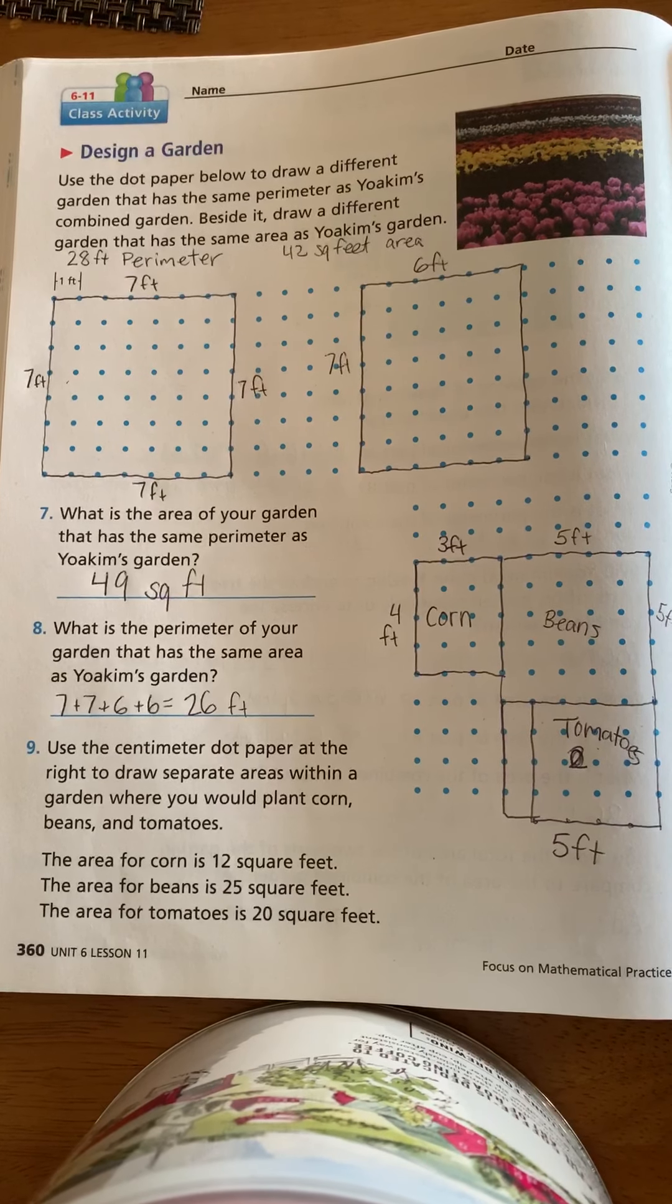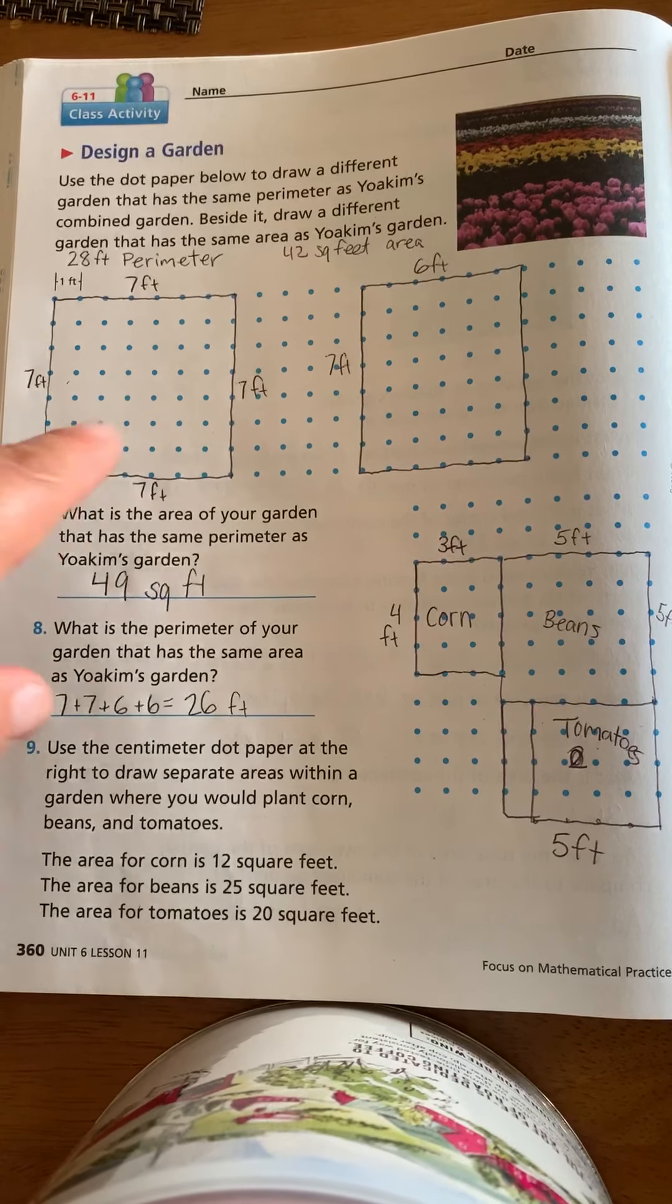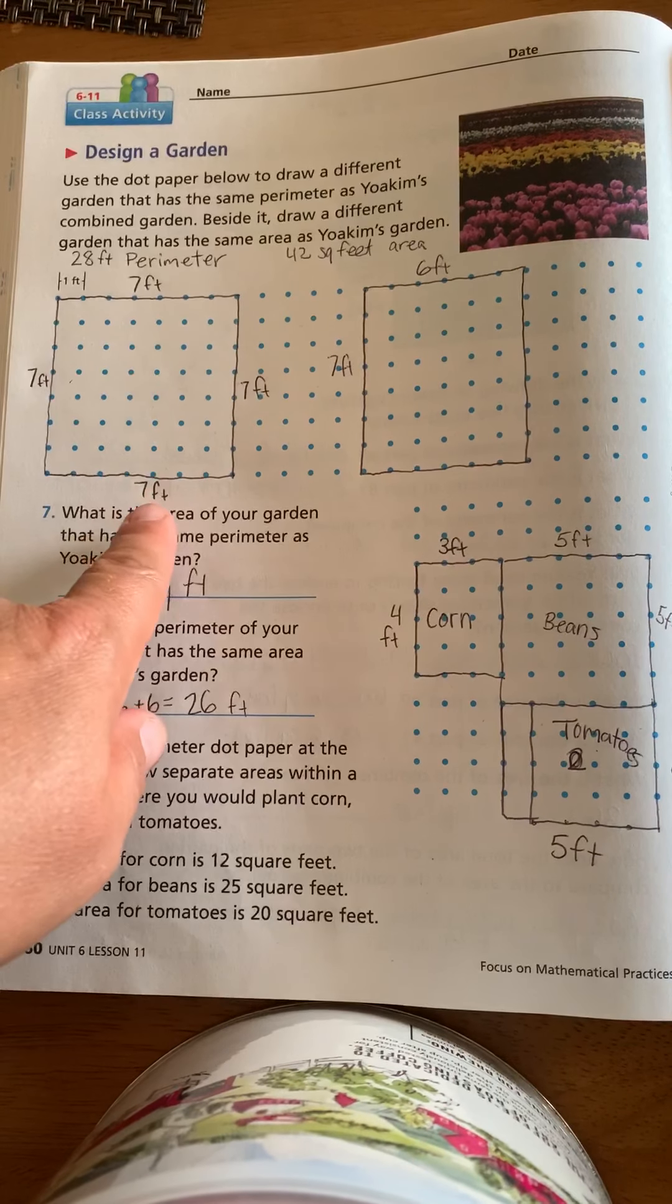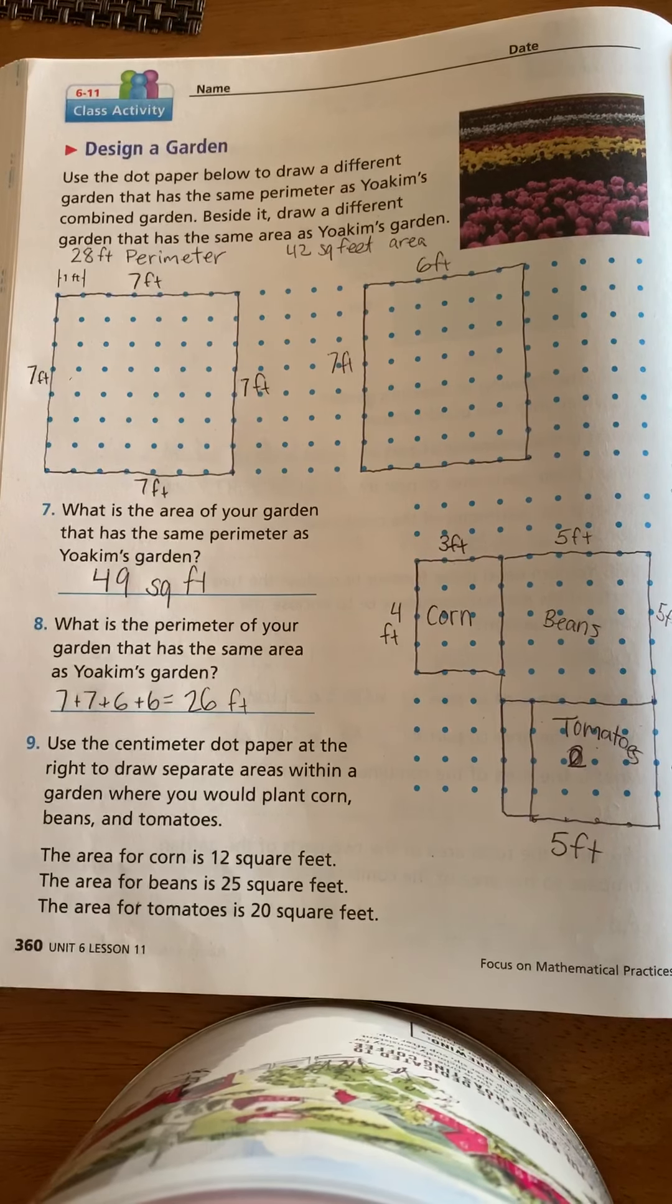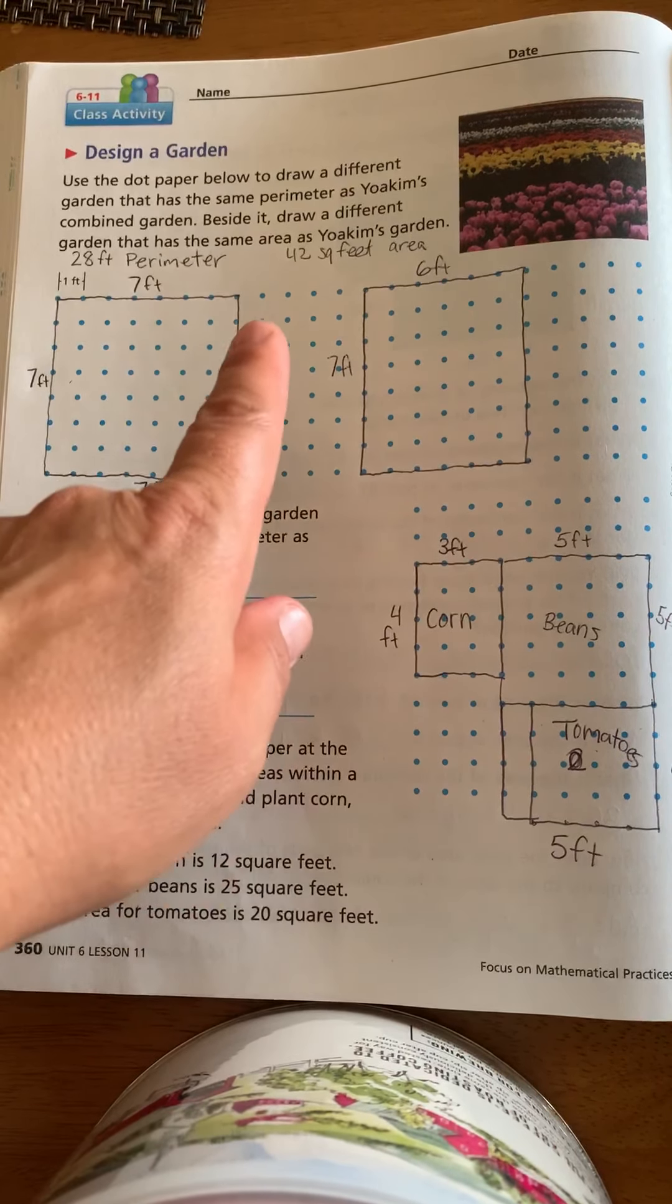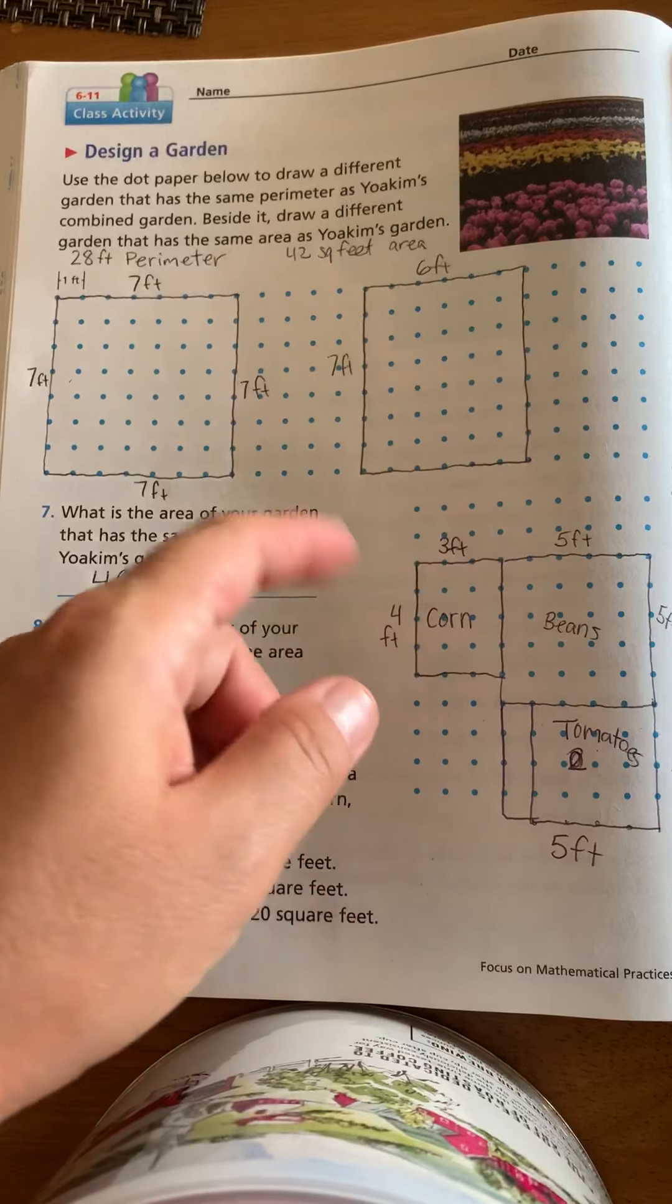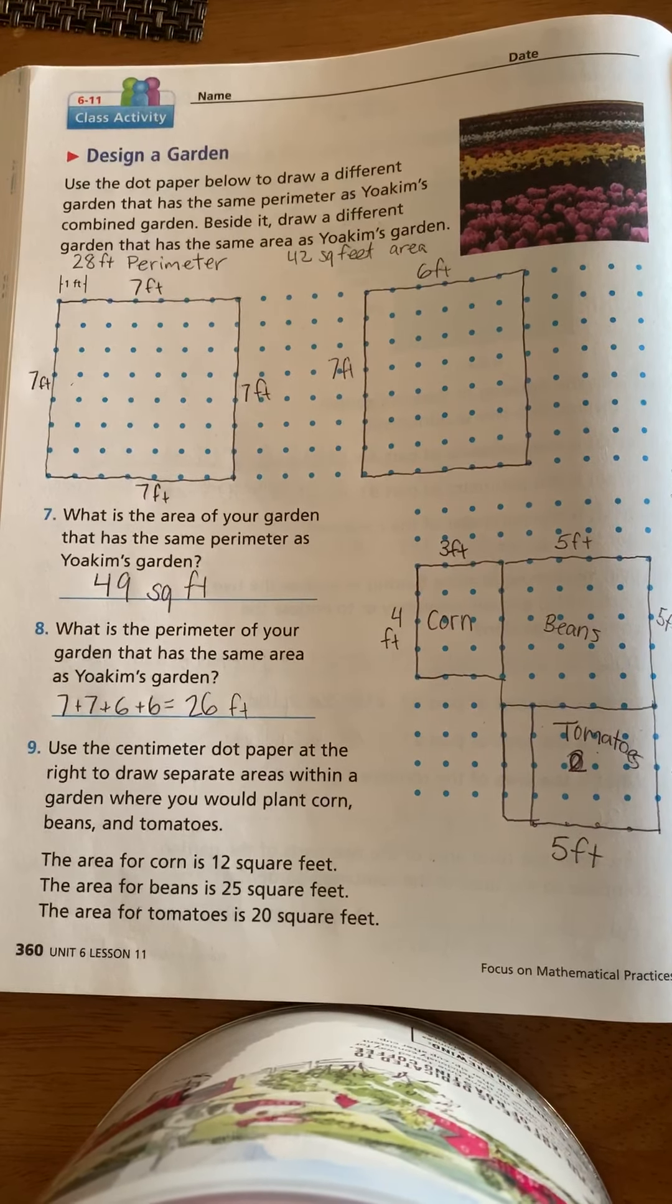Draw a different garden that has the same area as Joaquin's garden. So perimeter, I had to write that down. So I remember the first one had a 28 foot perimeter. So I made this garden that was a square, each side was 7 because I know 7 times 4 is 28. And then it was 42 square feet for the area. And so I knew that 6 times 7 was 42. So I made another rectangle garden that's 6 by 7.